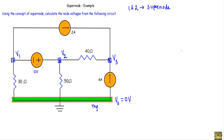The positive terminal of this 10-volt source is connected at node two and the negative terminal is connected at node one, meaning node two is at higher potential and node one is at lower potential. The voltage difference between node two and node one is given by V2 minus V1, which equals the known voltage source value of 10 volts. So I can write: V2 minus V1 = 10 volts. This will be our equation number one.